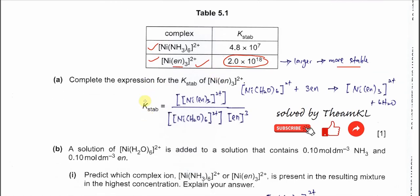Part A completes the expression for the K_stab of the nickel with the 3 EN. First you need to know there is a reaction like this. The nickel with the water ligand, hexa aqua nickel, reacts with 3 EN. Because EN is a bidentate ligand, it only needs 3. Then you can form the 6 coordination points. After that you form the new complex, the nickel with 3 EN, and all the water ligand has been substituted or exchanged.